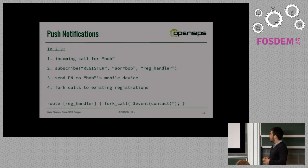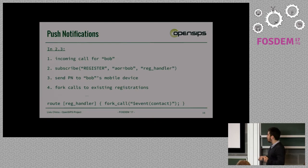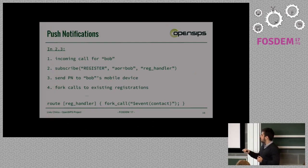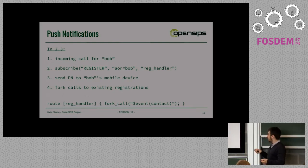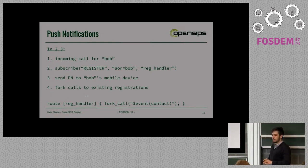All of these issues are solved with the event-driven paradigm, because now once the call arrives, we simply subscribe for the register event. We parameterize it with the Bob AOR and install this handler. We also launch the push notification and fork the phone call to the devices that are currently registered. And should the push notification actually work, we simply add more branches and do it as many times as needed.